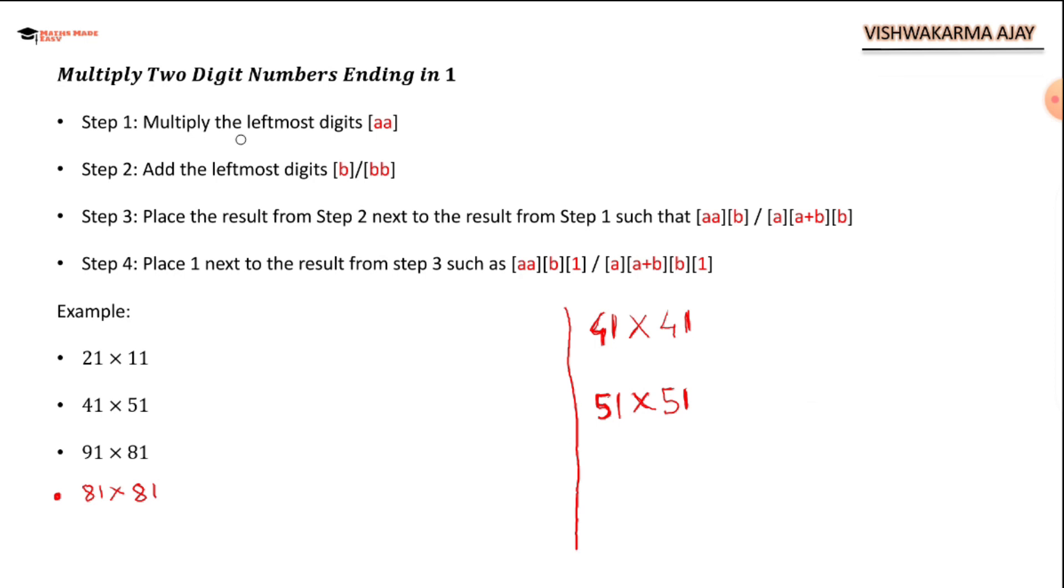Step number one: Multiply the leftmost digits. Step two: Add the leftmost digits. Step three: Place the result from step two next to the result from step one. Step four: Place one at the end.